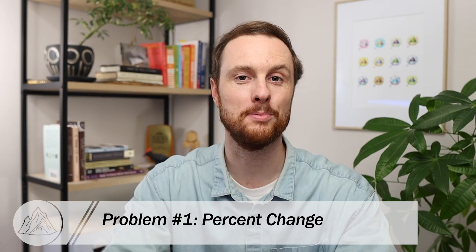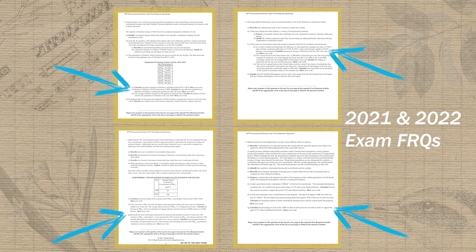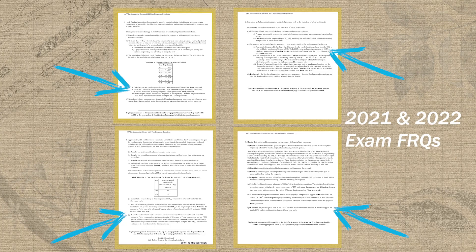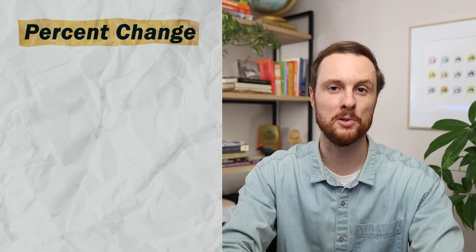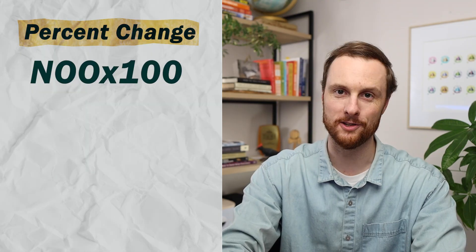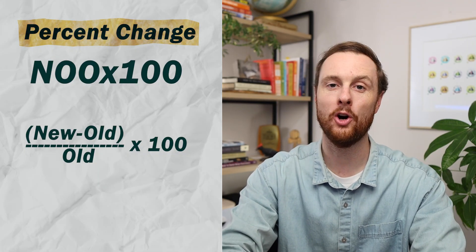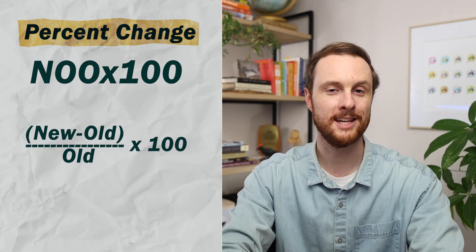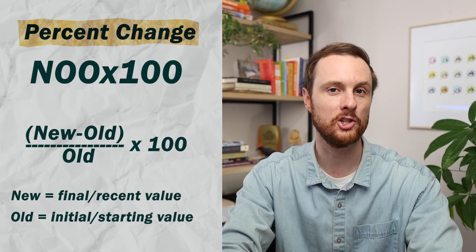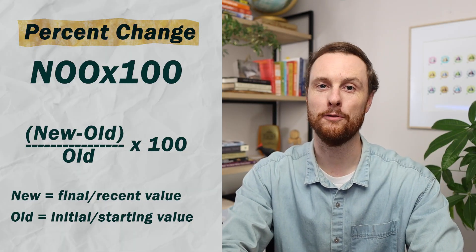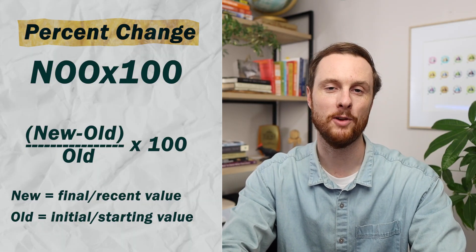The first type of calculation that you need to know for your unit three exam is percent change. Exam writers love to put percent-based questions and especially percent change calculation questions on the FRQ section of the exam in May, so reviewing this type of calculation is critical if you want to do well on that FRQ section. The way I like to help my students remember percent change is "NOO times 100," with N-O-O standing for new minus old, all over old, times 100. New means the new or final number in a scenario, and old means the initial or starting number.